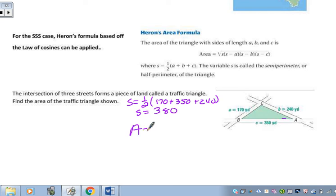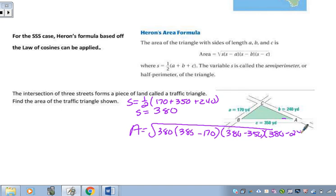Once I'm there, area is going to be, and we're going to take the S value of 380. And then we're going to subtract each of the sides from there. So we have 380 minus 350, 380 minus 240. You can throw this in the calculator just like you see it. And you should get the area to be 18,367.38. And we were talking about yards squared.